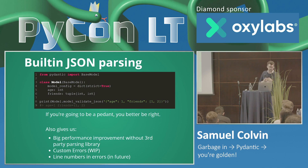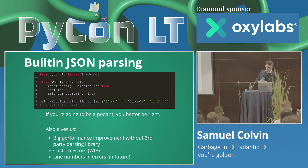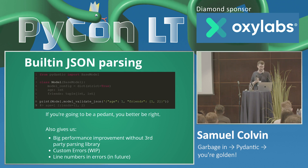This also gives a big performance improvement — we can parse the JSON in Rust without ever going to Python until we return the final object. And you see we've put strict mode on there, so it would fail if we weren't parsing the JSON directly.